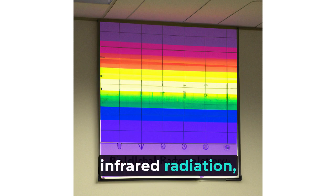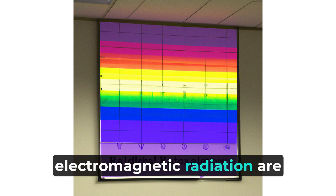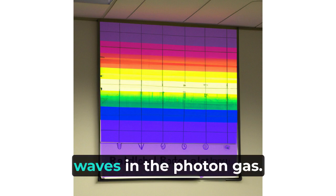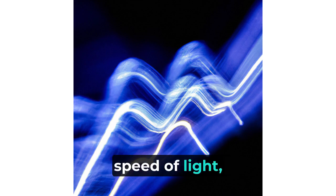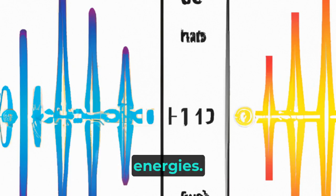Visible light, infrared radiation, ultraviolet light, and all other types of electromagnetic radiation are all different forms of these waves in the photon gas. Each travels at the speed of light, and their energy depends on their frequency, with higher frequencies corresponding to higher energies.